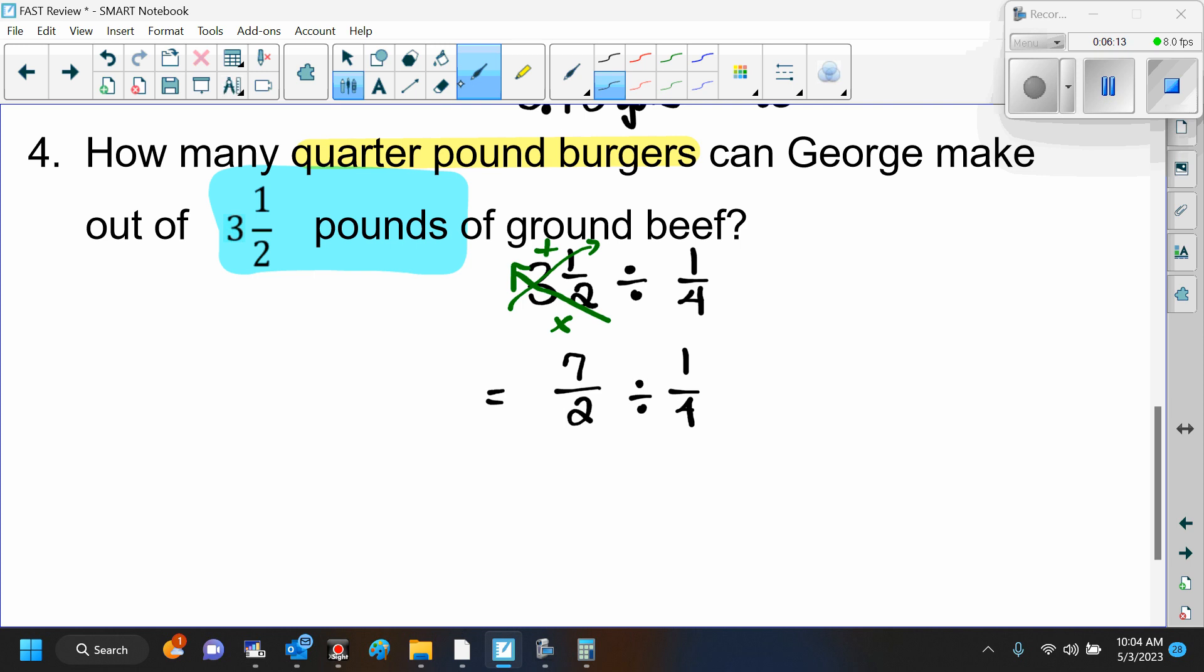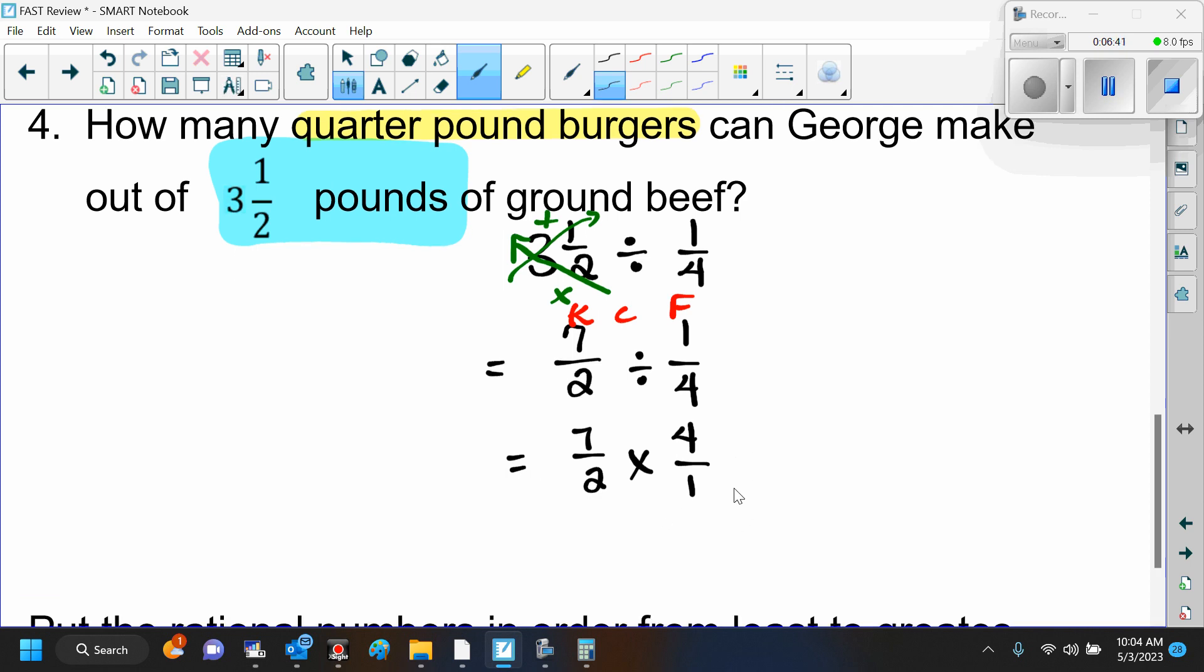So how do I divide fractions? What's that rule? Keep, change, flip. We're going to multiply by the reciprocal, right? I'm going to write keep, change, flip here just for your reminder. So we have 7 halves, the division becomes multiplication, and the 1 fourth becomes 4 over 1. And now before you multiply, what do I like for you to do? We can simplify. So here we have 2 divided by 2 is 1, 4 divided by 2 is 2, and now you can just multiply straight across.